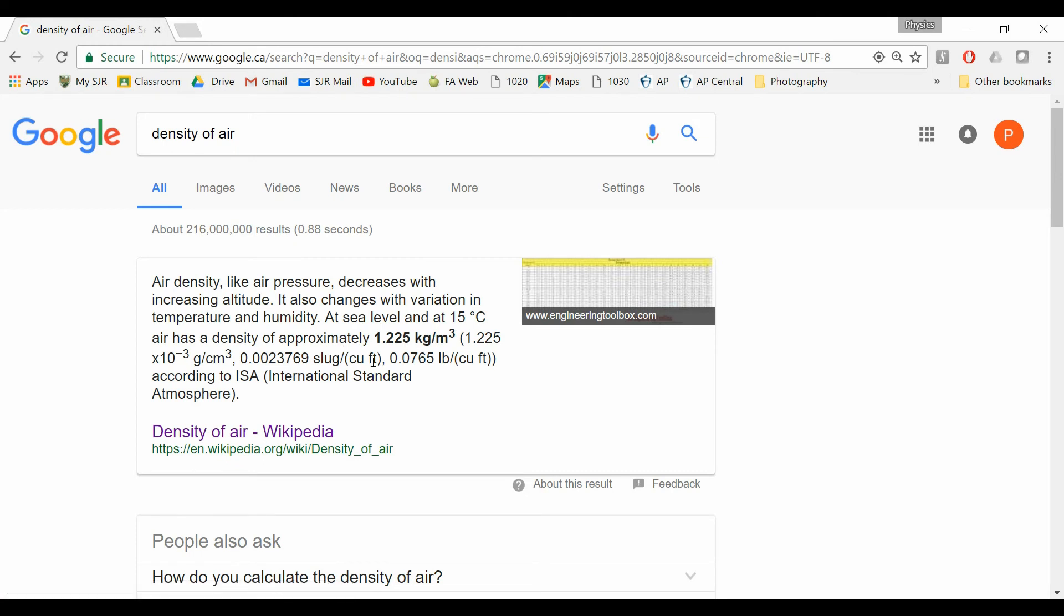Of course, this is very complicated because it varies a lot, but you'll notice that, just jumping out here at sea level, 15 degrees, the air has a density of approximately 1.225 kilograms per cubic meter.